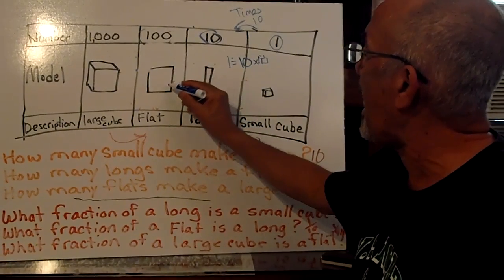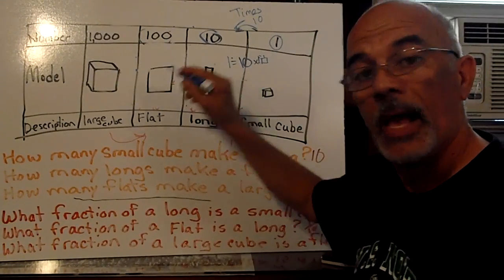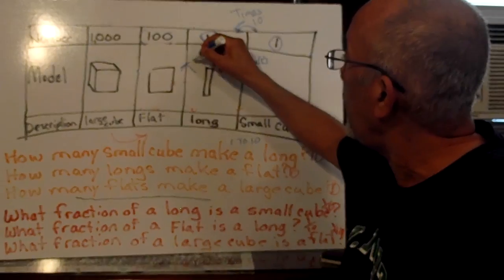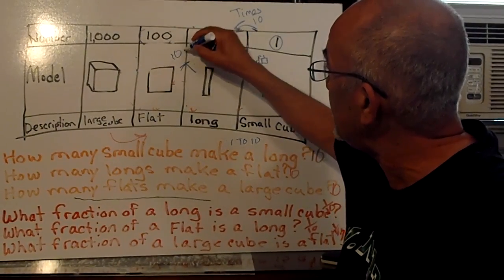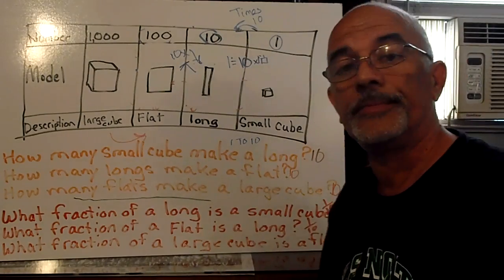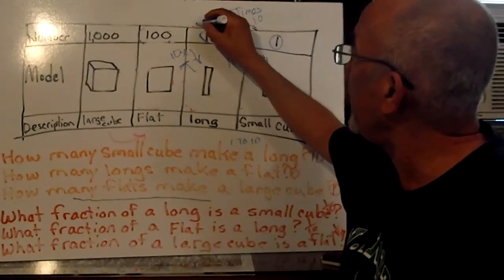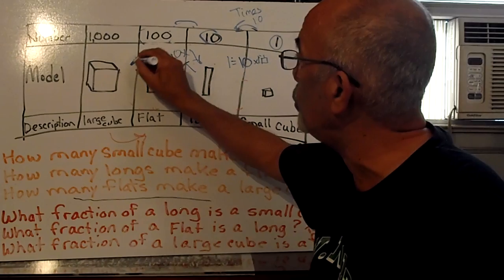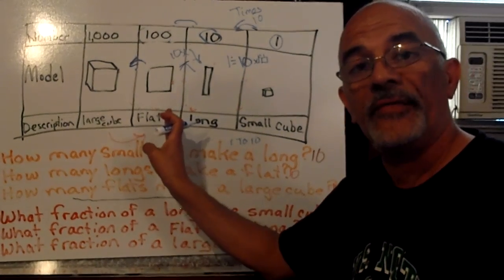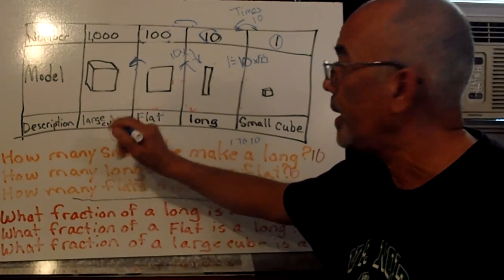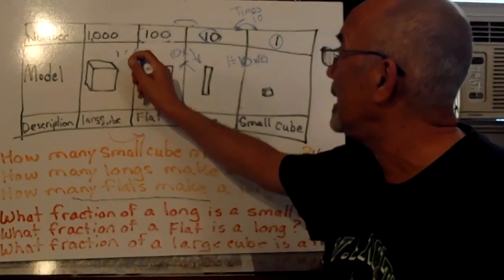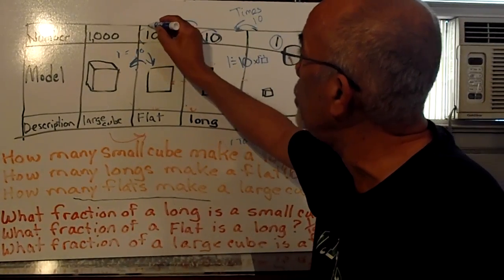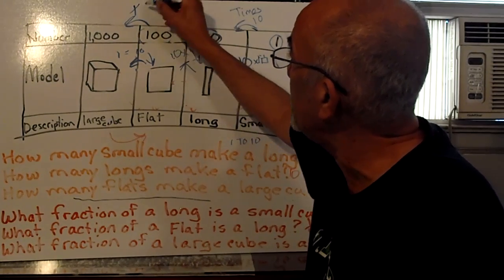Let's try this again. How many longs does it take to make a flat? 10 times the long one will give you 1 flat one. And here again, 1 flat one equals 10 long ones. And the same holds true for how many flats does it take to make a large cube. We have 1 large cube equals 10 flats. Same relationship, if I wanted to get from the hundreds to the thousands, times 10.